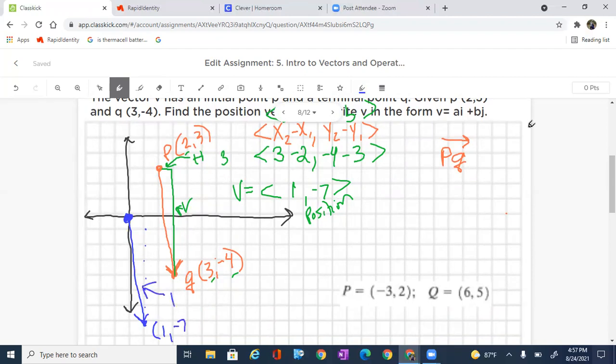The vector, however, is written as <1, -7>. And we can continue to write it in the form of AI plus BJ, which is just simply 1, A, and it's a negative 7, so negative 7J. Or we can just simply write I minus 7J. That's how we would write it.